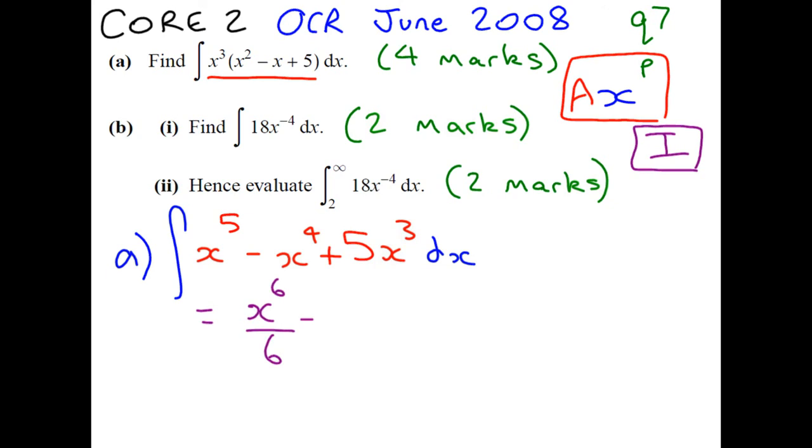Take away x to the power of 5 over 5 plus 5x to the power of 4 over 4. And do not forget, plus c. Because there could have been a constant, and if it was differentiated, it would have disappeared, as you well know.